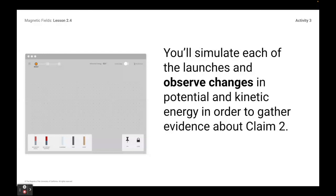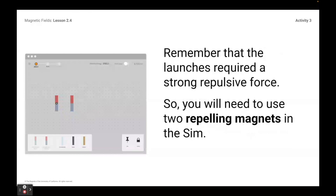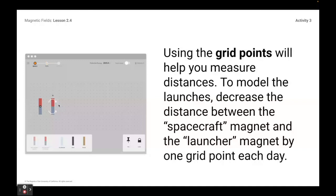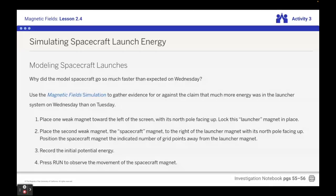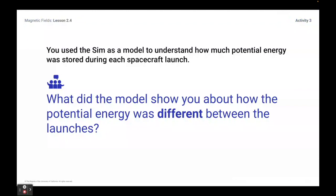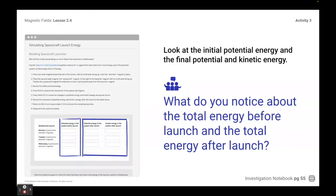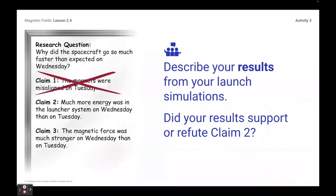You're going to run through all eight of those steps, observe the changes to potential and kinetic energy, and answer those questions. Remember that launches required a strong repulsive force, so you're going to need to use repelling magnets in order to run those different simulations. We're going to use the grid points to measure distance, because we want to look at what happens when we move the magnets closer together. Think about what the model shows you about how the potential energy was different between the launches, and what you noticed about the total energy. We really want to nail down: is claim two supported by the evidence or refuted by the evidence?